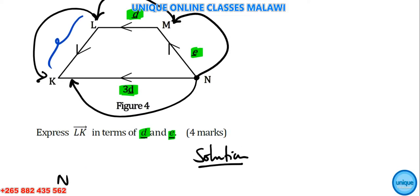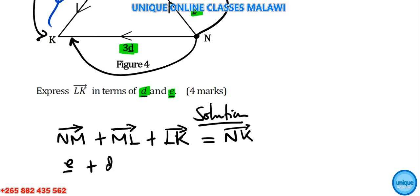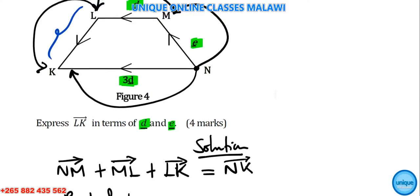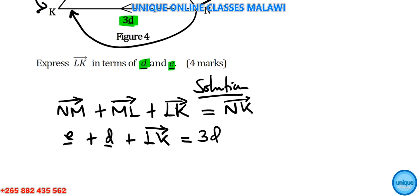Solution: We're going to write NM + ML + LK = NK. We are putting d here, d here, then plus LK. NK equals 3d. So we have e + d + LK = 3d.